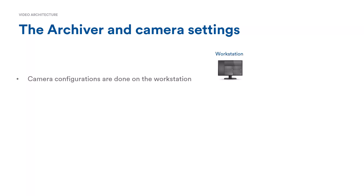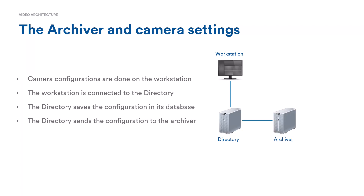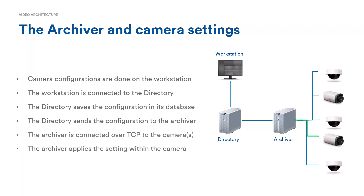When a system administrator applies a camera setting — such as 15 frames per second at VGA resolution — the workstation is connected to the directory, which saves all system configurations. The directory pushes the setting to the archiver, which has a TCP connection to the cameras and pushes the setting into the camera itself. For this reason, once a camera is connected to a Security Center system, you should stop using the camera's own web page to change settings and instead have all camera configurations pushed from the Genetech server.